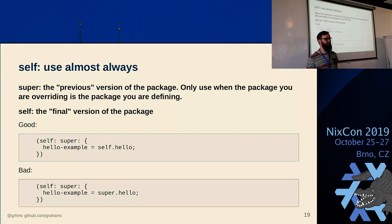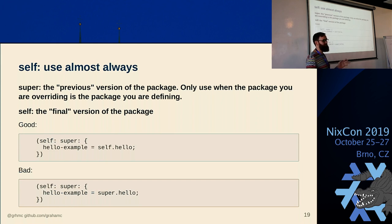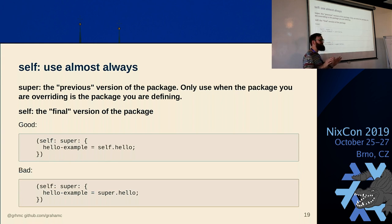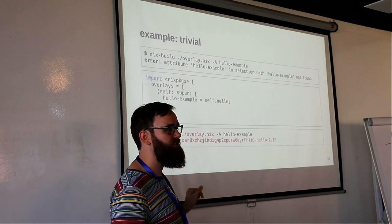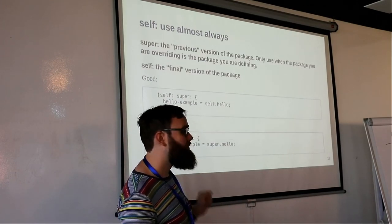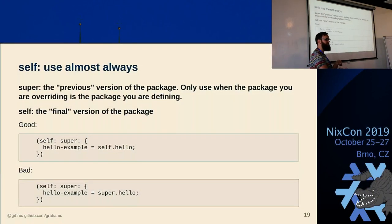The overlay function has two parameters named `self` and `super`. Figuring out when to use self vs super took me a long time, and many blog posts about it are only about a quarter correct. In general, you always want to use self. If you get an error, switch to super. `self` returns the last version of the package that will exist — the final fixed-point. `super` refers to the version of Nixpkgs before your current overlay. This involves some time travel. Typically: use self unless you get an error, then try super.